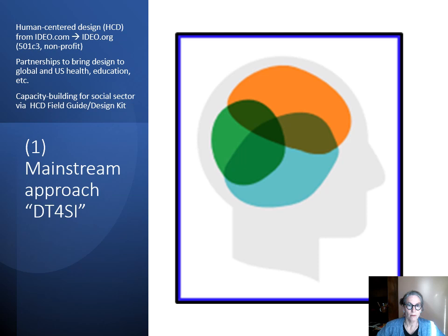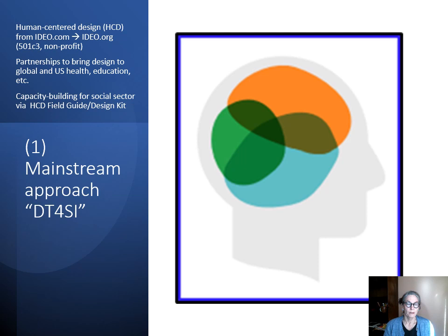The mainstream model of design thinking for social innovation is best illustrated by the IDEO model of human-centered design — create, deliver, HCD — from the global for-profit IDEO design firm and their spin-off IDEO.org, a 501c3 nonprofit. They get their funding from the Gates Foundation, Hewlett Foundation, and other foundations, and they partner with organizations like Marie Stopes International, Adolescent 360 or A360, PSI — Population Service International — and other global health and development partners. They also work with U.S.-based health, education, and financial sector organizations, and they promote capacity building for the social sector via their human-centered design field guide and design kit, which you can find in Canvas. And they support the Plus Acumen or Acumen Academy global online course.